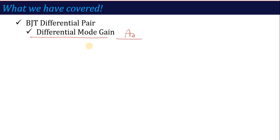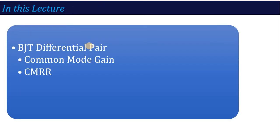Now in this lecture, on BJT Differential Amplifier, we are talking about what is the Common Mode Gain, and once we calculate this Common Mode Gain, then we can calculate the value of CMRR, that is Common Mode Rejection Ratio. So let's start our lecture on Common Mode Gain of BJT Differential Amplifier.